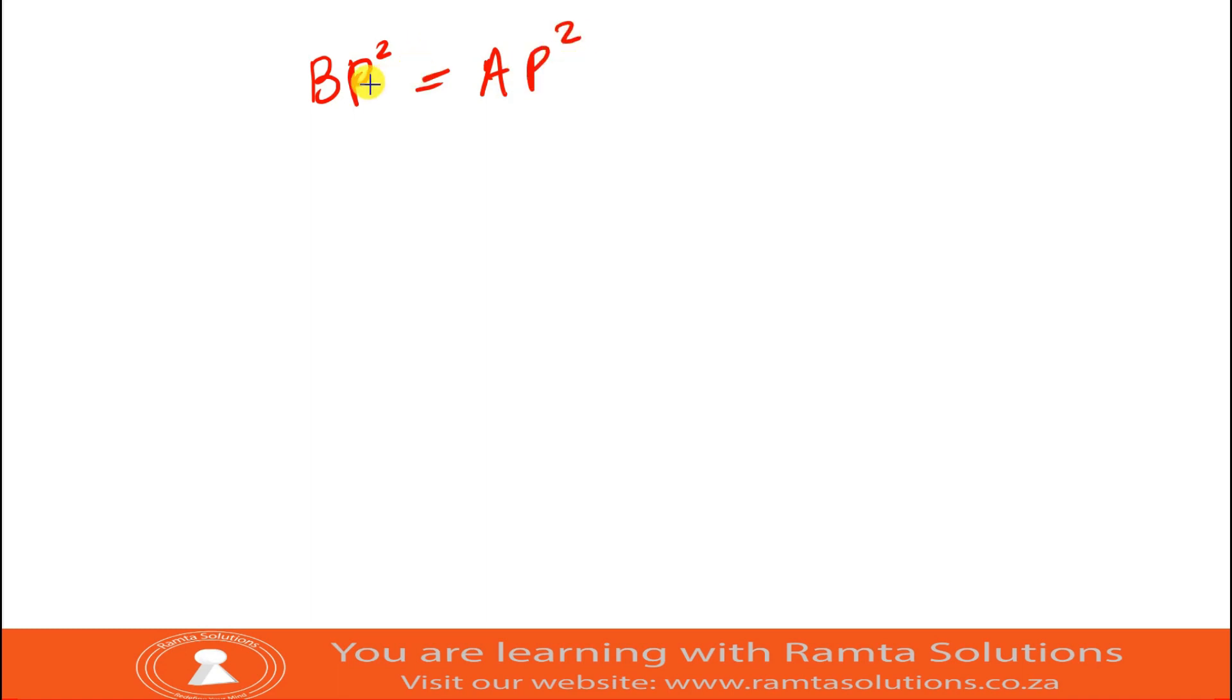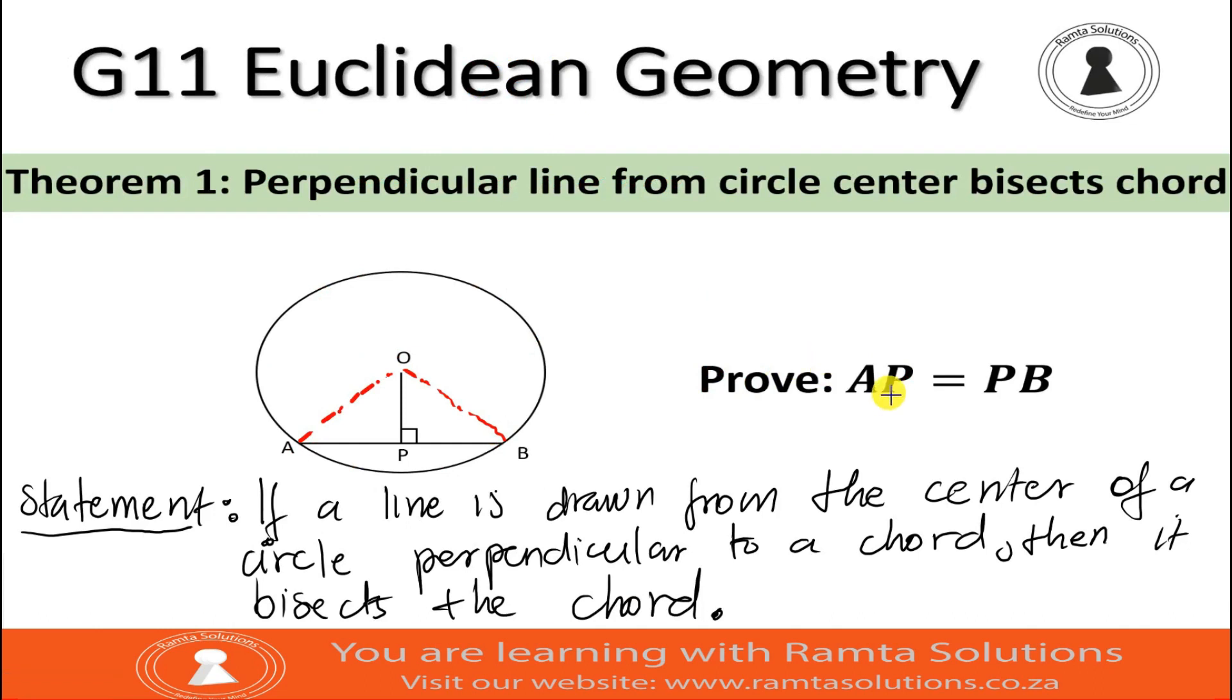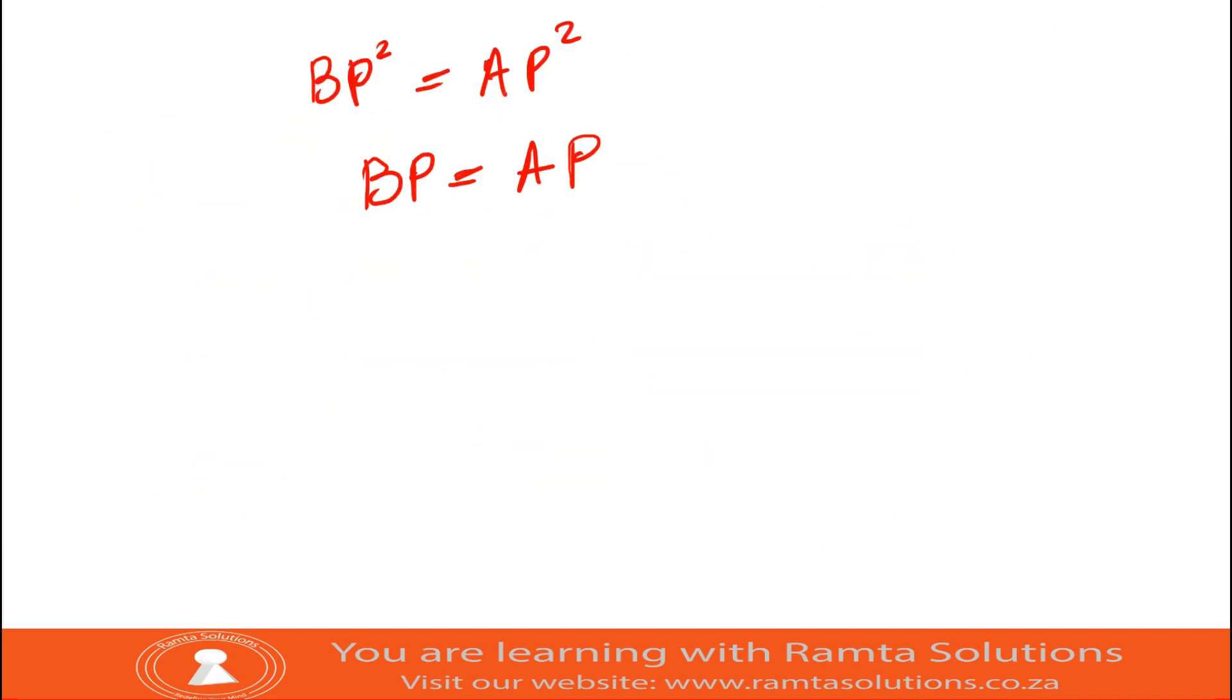Now, if this is what we say, I see we have two parts here. So what do we say? We can multiply the, I mean, we have squares, so we can multiply the squares by half. So what do we have? We have BP equals AP. Remember, BP is similar to saying PB. Let's go back to what the question was asking us. The question was asking that we prove AP equals PB. So we have proved it.